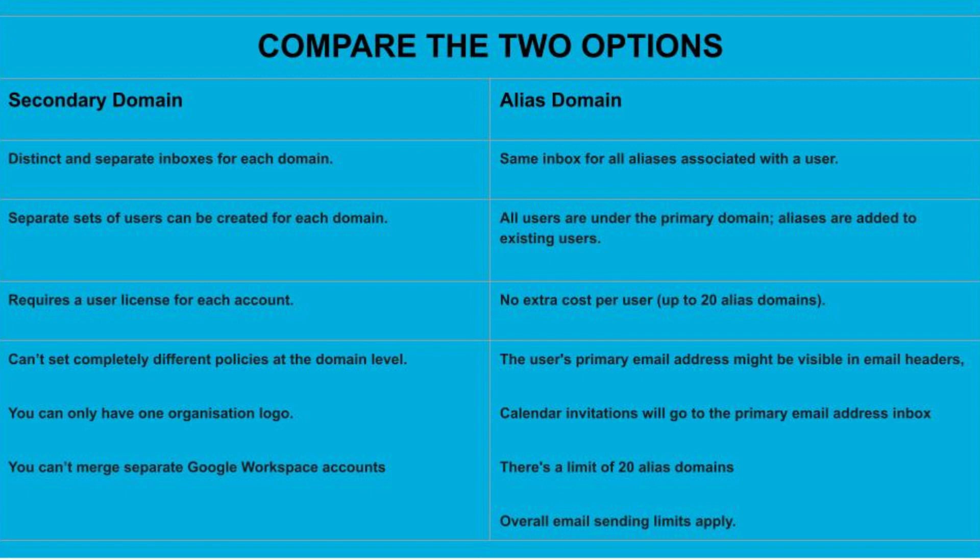There are some limitations to either of these options. With secondary domains, you can't set completely different policies at the domain level — some things will be the same. You can only have one organization logo, and you can't merge separate Google Workspace accounts. In alias domains, some limitations include: the user's primary email address might be visible in some email clients, calendar invitations will always only go to the primary email address inbox, there's a limit of 20 alias domains, and overall email sending limits will apply.